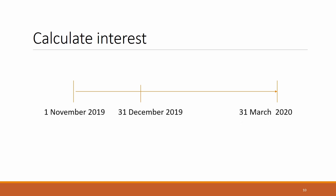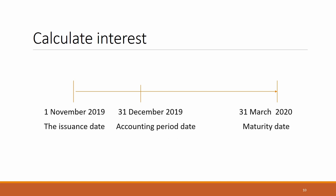We calculate interest in two parts. From 1st November to 31st December 2019 is two months — we must make an adjustment at 31st December to accrue interest expense. From 1st January to 31st March is three months — we pay the notes payable at the maturity date, 31st March, which is when the remaining interest expense is incurred.